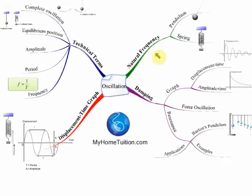You also need to know what is meant by natural frequency, the factors that affect the natural frequency of a pendulum, the factors that affect the natural frequency of a spring, and after natural frequency you need to know about damping. Damping is a process where an oscillating system loses energy to the surroundings and its amplitude decreases over time.